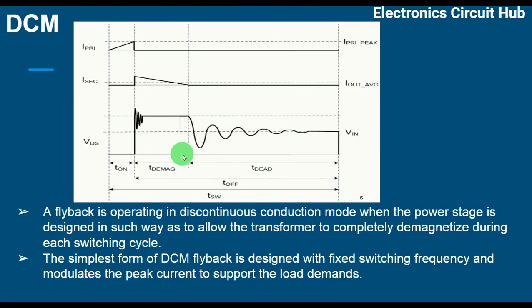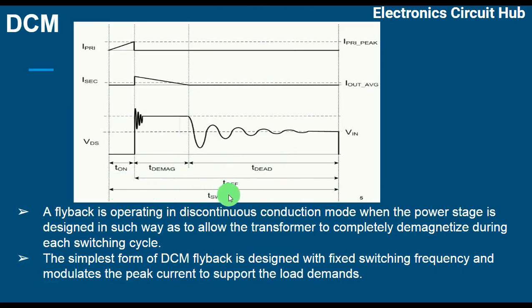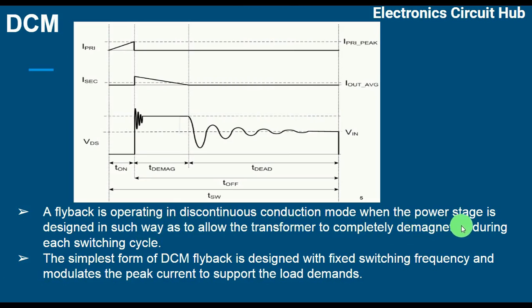You can see here the waveform of primary current I-primary, the secondary current I-secondary, and the drain-to-source voltage. This is the on time, this is the demagnetizing time, this is T dead time, this is off time, and this is the total switching period. In discontinuous conduction mode, the power stage is designed so that the transformer completely demagnetizes during each switching cycle — you can see the transformer is completely demagnetized here. The T-off time is made up of demagnetizing time and dead time.